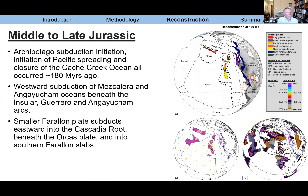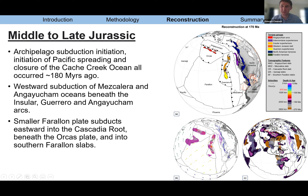Audience question: You have something labeled the Western Jurassic Belt — that ends up in a peninsula in Alaska, right? What does that refer to? Edward: I'm referring to the Klamath Mountains. Dickinson called it the Western Jurassic Belt, but it's analogous to the insular terrain along Alaska — the same package, the same setting, as well as the Guerrero terrain in Mexico. So it's all this big long arc, but depending on where you go geographically, they give it different names.